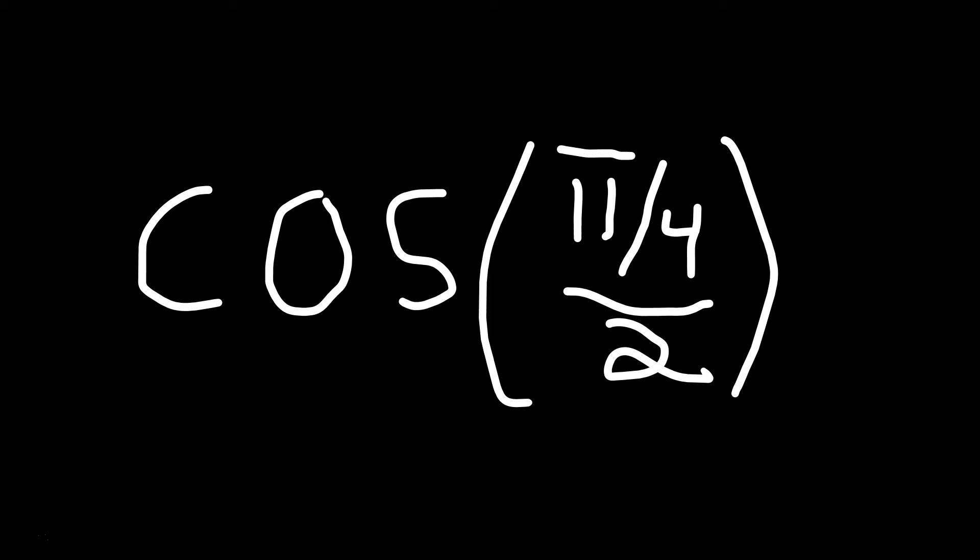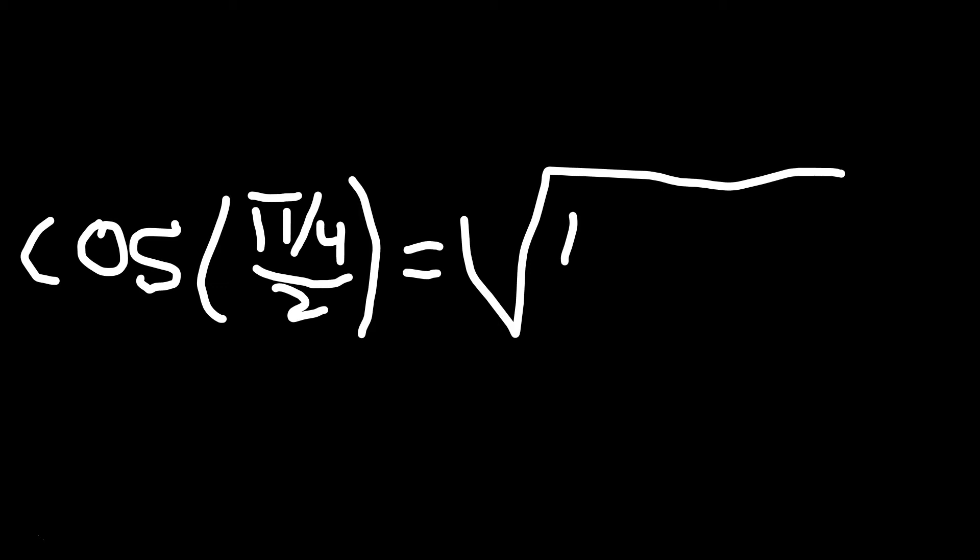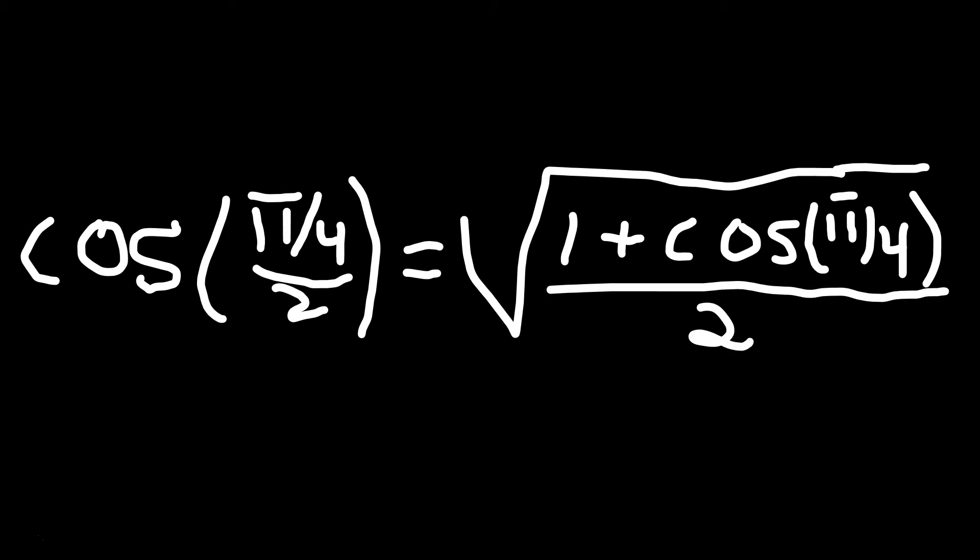And you need to see that because we have a formula that says cosine of pi over 4 divided by 2 is equal to the root of 1 plus cosine of that pi over 4, and that divided by 2 under the root symbol. So that's a formula that exists you can use.